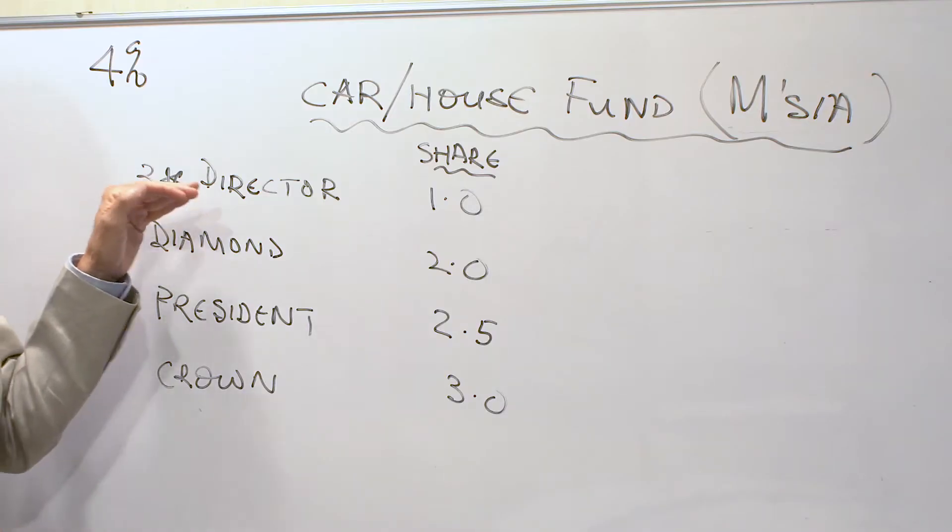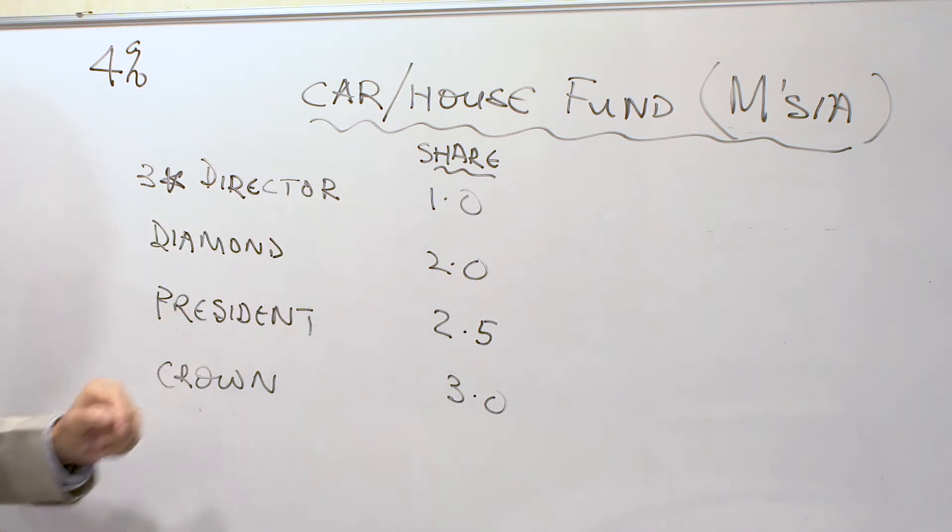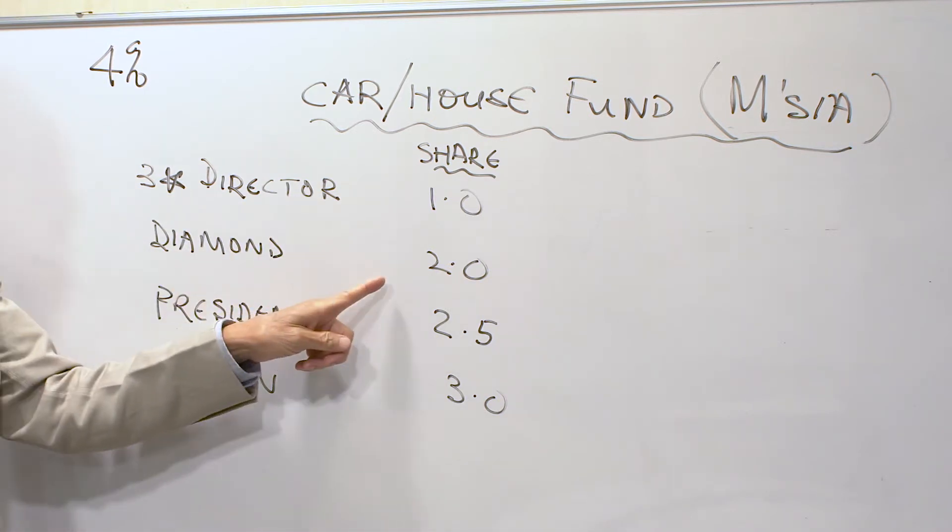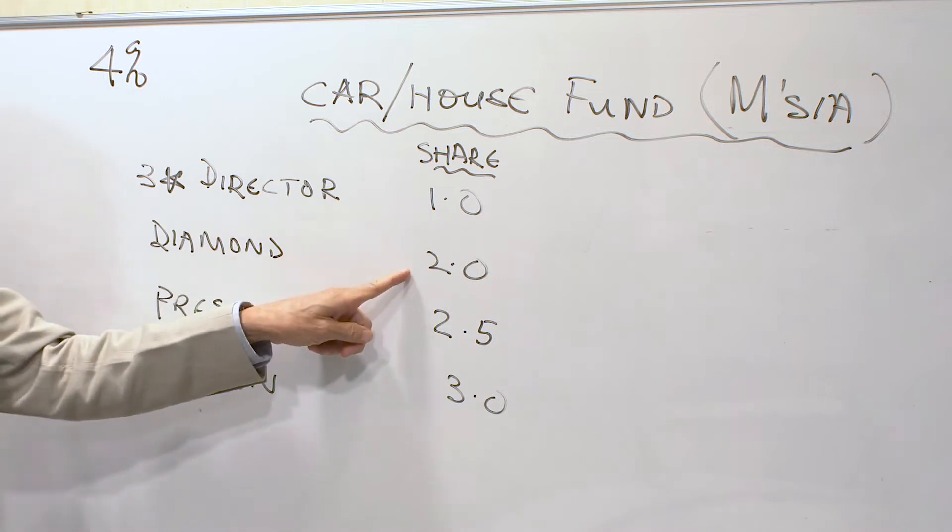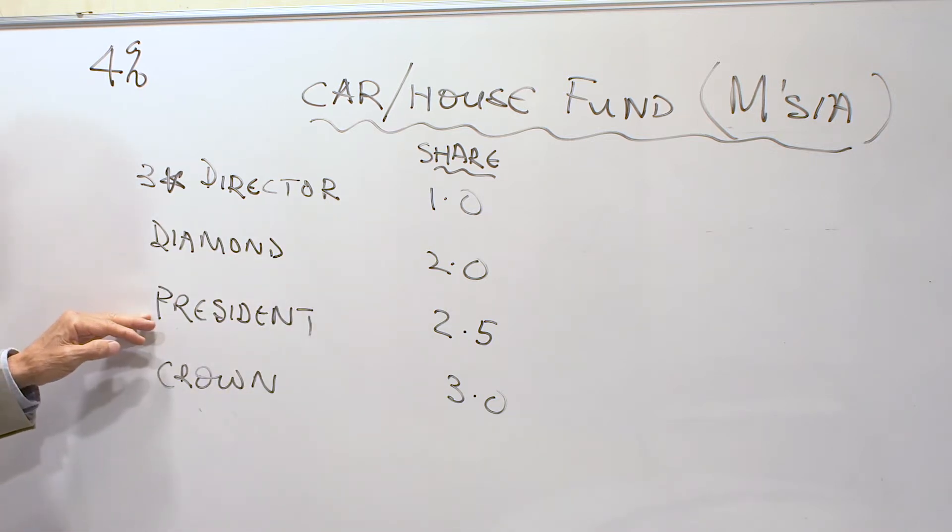If you are a three-star director, you qualify for one share. A diamond, you qualify for two shares. As long as you are in the diamond zone—diamond, two-star diamond, three-star diamond—you still get two shares. President, the same thing.